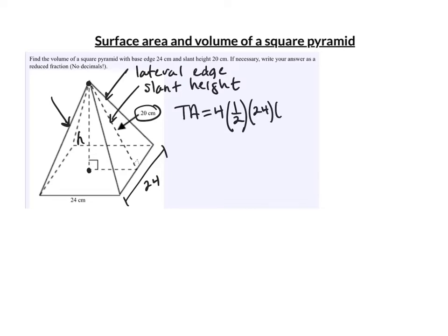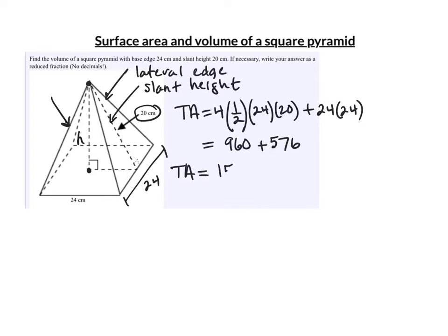Plus we have the square at the bottom, which is 24 × 24. Punching this into the calculator: the first part multiplies to 960, and 24 × 24 is 576, so the total surface area is 1,536 centimeters squared.